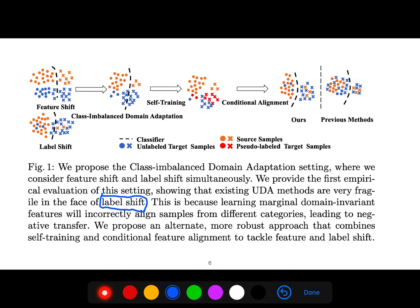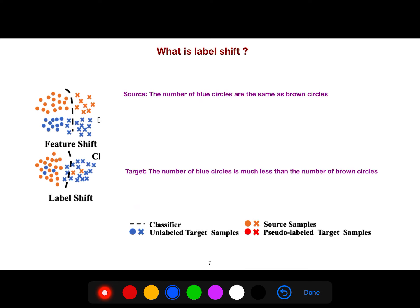We propose an alternative, more robust approach that combines self-training and conditional feature alignment to tackle feature and label shift.